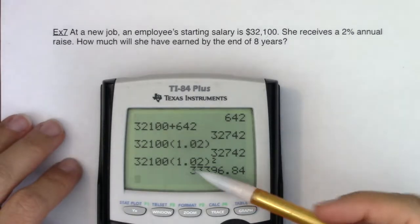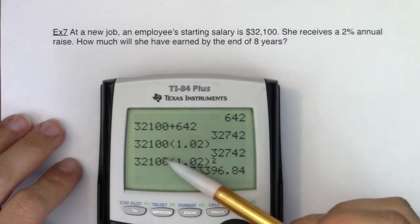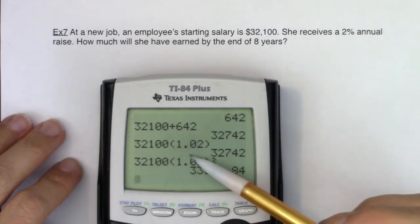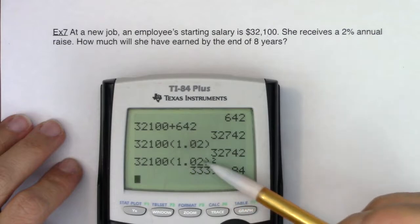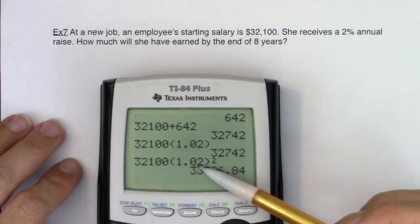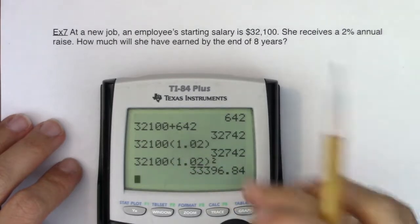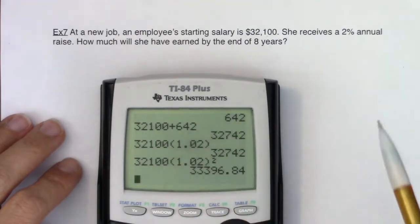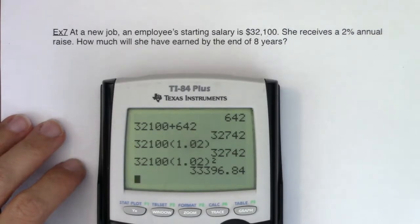And this was that exponential growth we talked about in chapter six. We always had our starting value and then we had our power. It had a base and an exponent. When this base is larger than one, we're looking at exponential growth. If this base was smaller than one, we were looking at exponential decay. And if the base was equal to one, it was equilibrium. If the base was equal to one, she would always make $32,100.